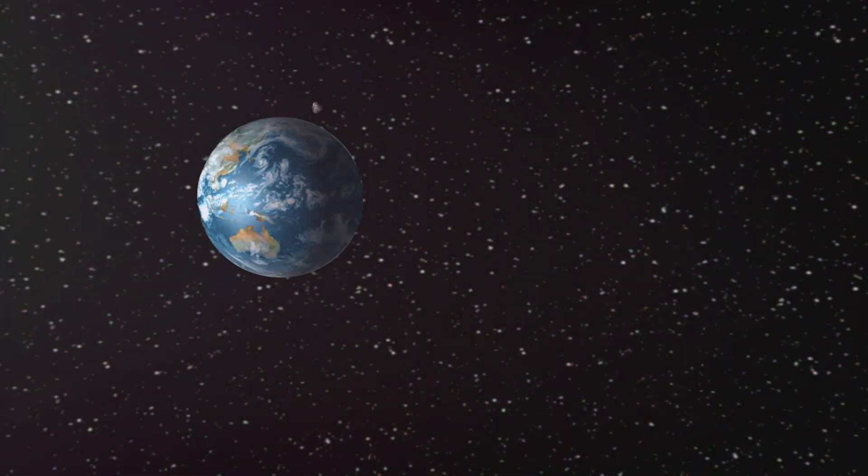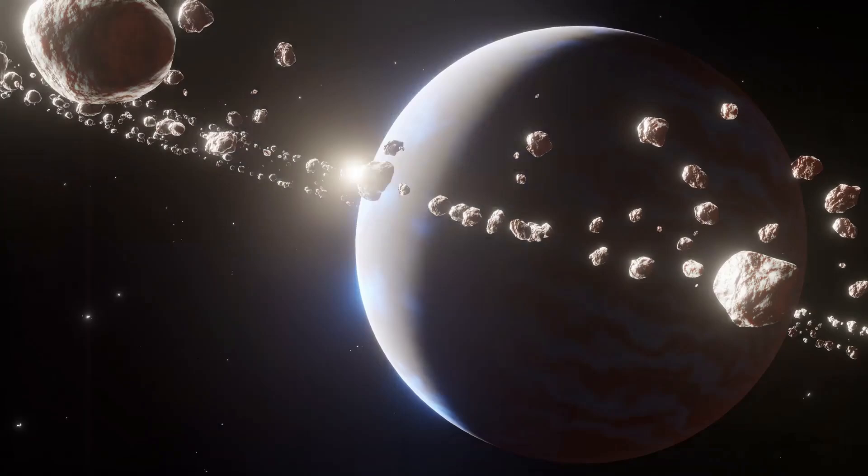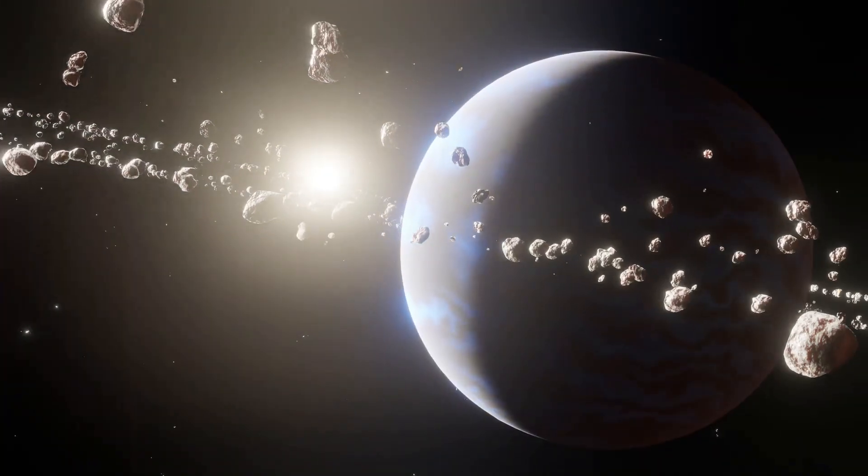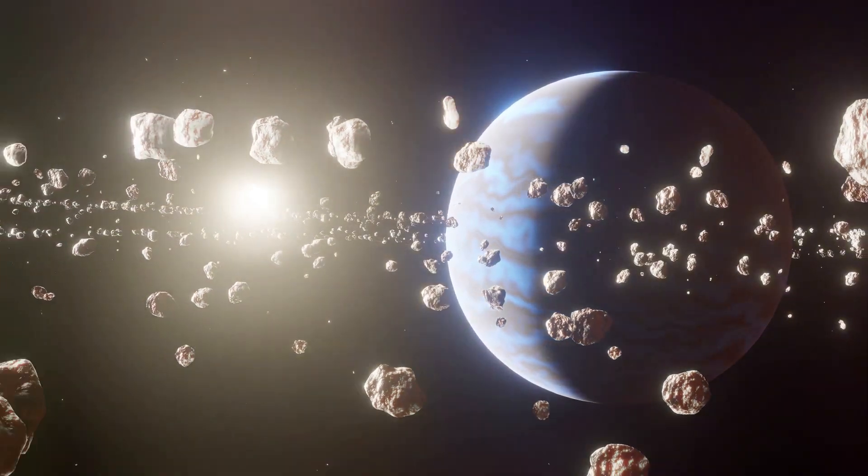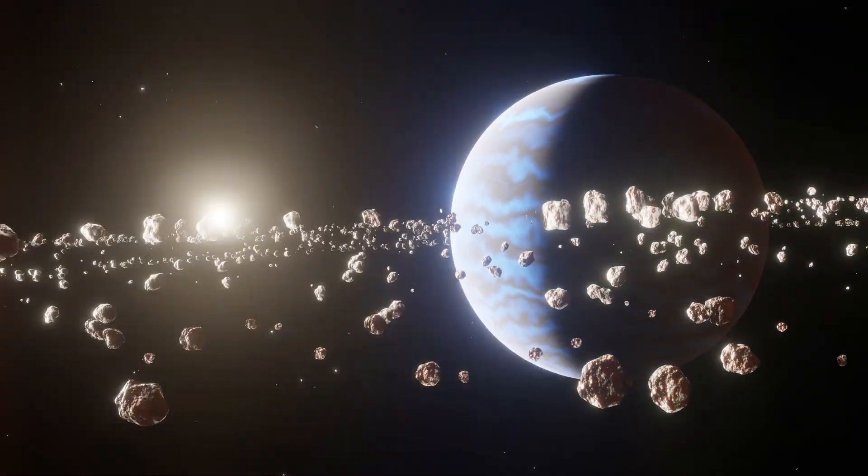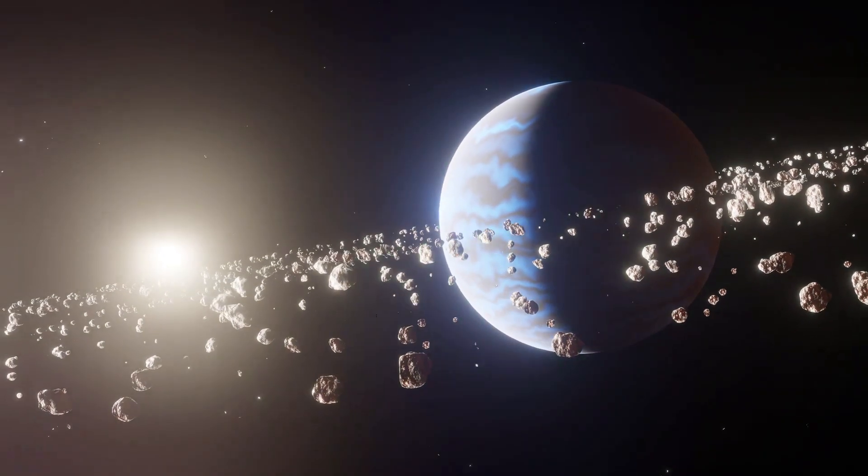Apophis is a near-Earth asteroid measuring about 370 meters in diameter. It is named after the ancient Egyptian god of chaos and destruction, fitting for an asteroid that could potentially cause catastrophic damage if it were to collide with Earth.